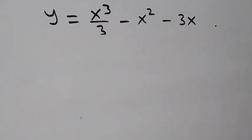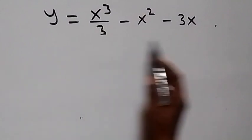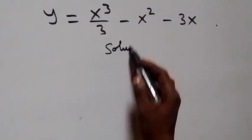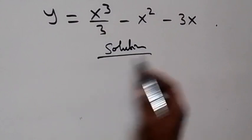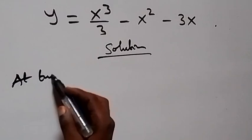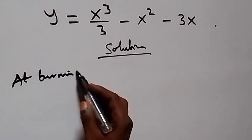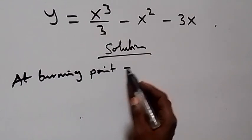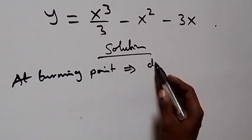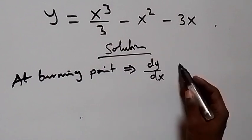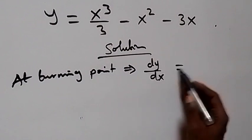Hello, you're welcome. We are going to investigate the nature of the turning point, or stationary point, of this function. From what we have here, the first thing we should note is that at a turning point or stationary point, dy/dx — that is, the derivative — is equal to zero.